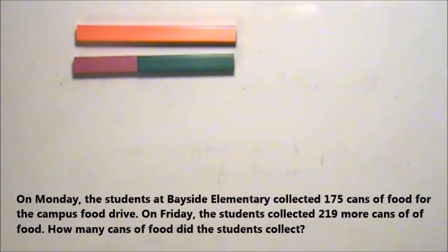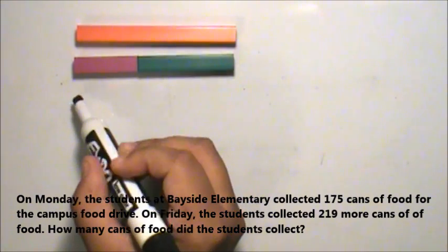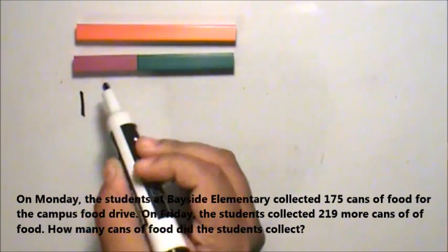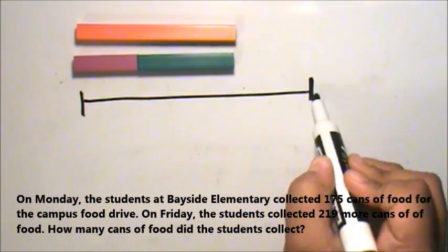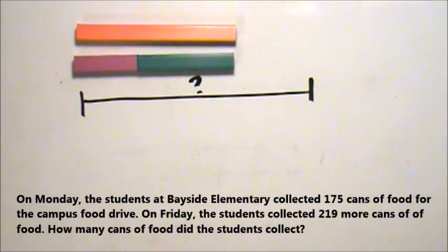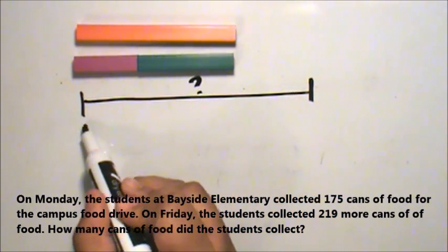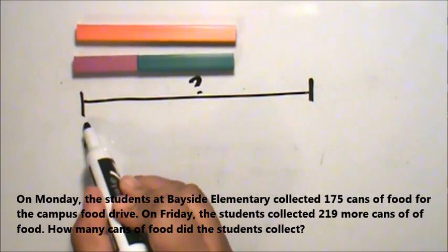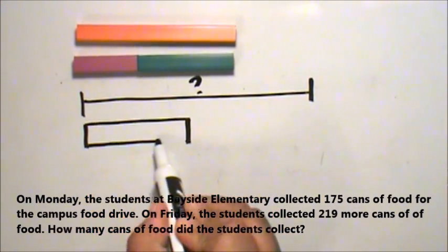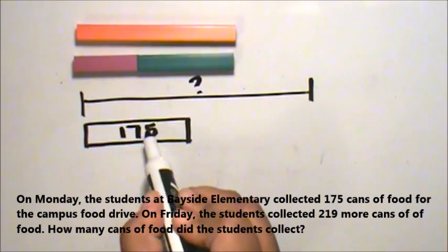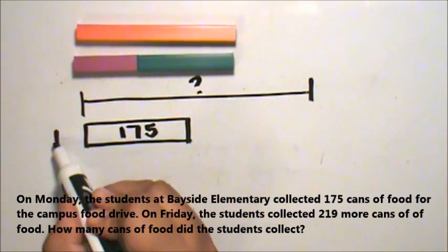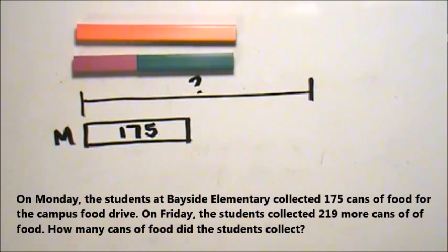First, I know I am looking for the whole. I draw a line to represent the whole, and I write a question mark because the whole is unknown. Then I draw the 175 cans that were collected on Monday. I write my quantity and I label it.